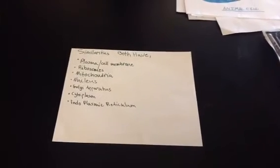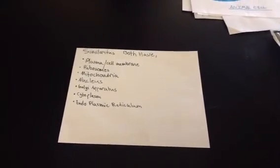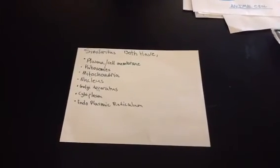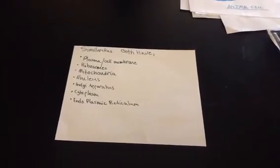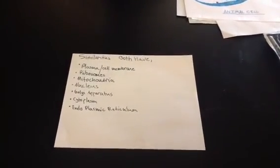Both plant and animal cells both have plasma and cell membranes, ribosomes, mitochondria, nucleus, Golgi apparatus, cytoplasm, and endoplasmic reticulum.